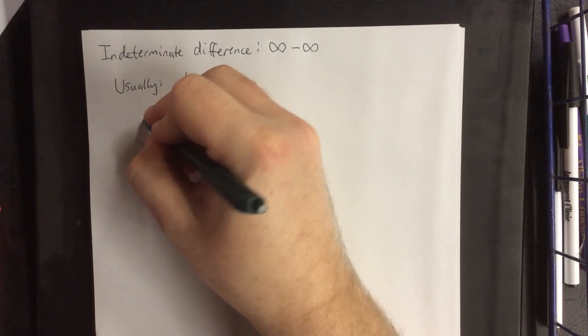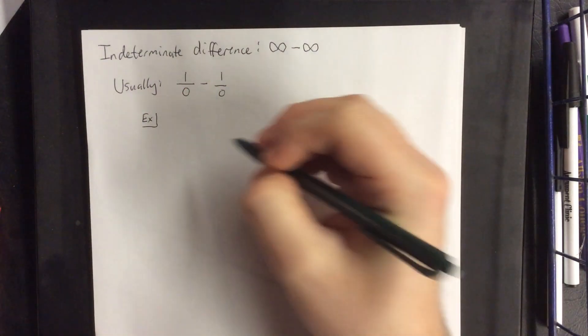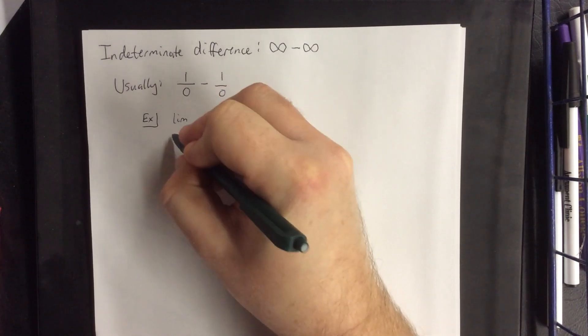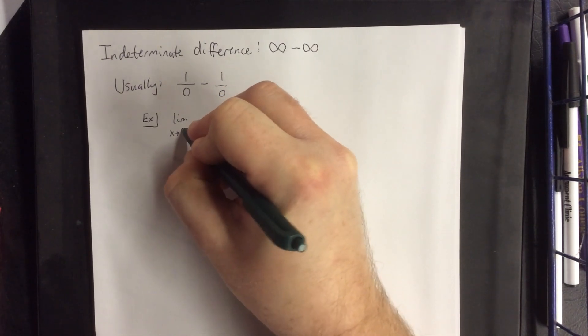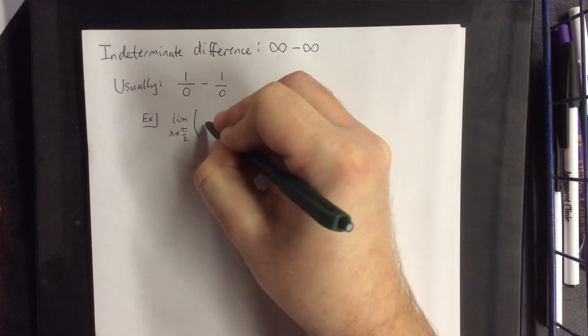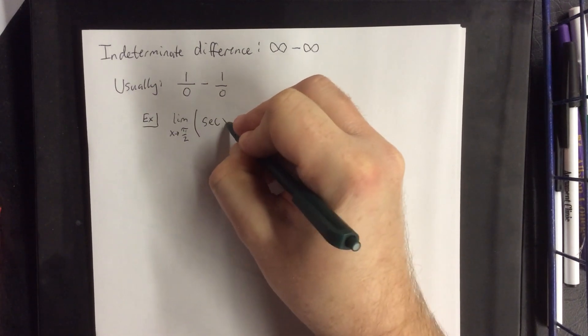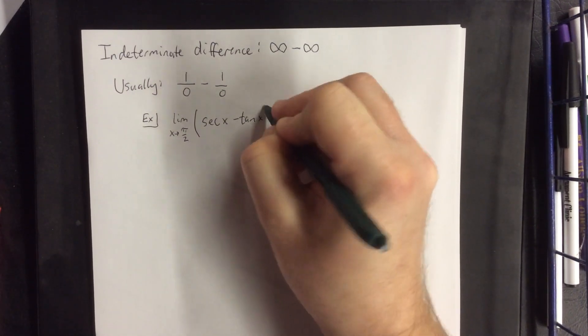An example of one such thing, we could see something of the form the limit as x goes to pi over 2 of the secant of x minus the tangent of x.